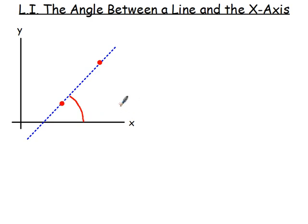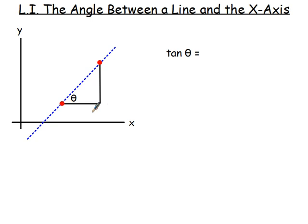To find that angle, you want to think about how you'd go about finding its size. For a straight line, you can pick any two points, and if you draw in a small triangle with a horizontal and vertical line, you'd have a right angle in there. The size of the angle in this triangle is the exact same as the angle between the line and the x-axis.